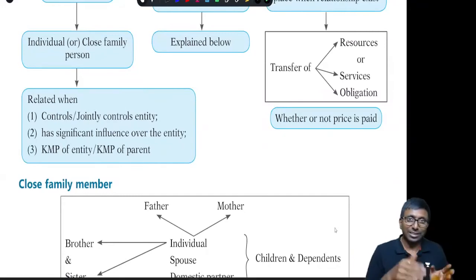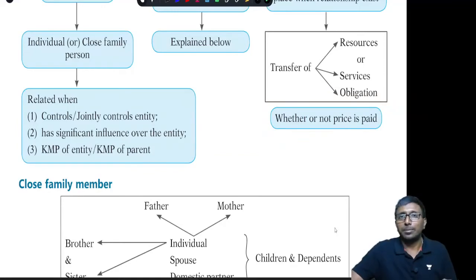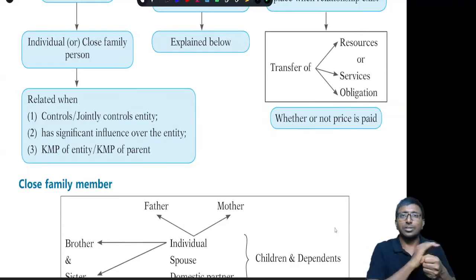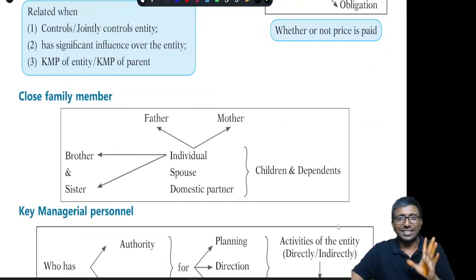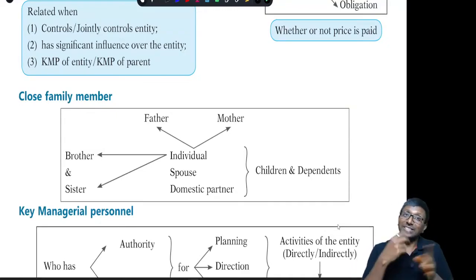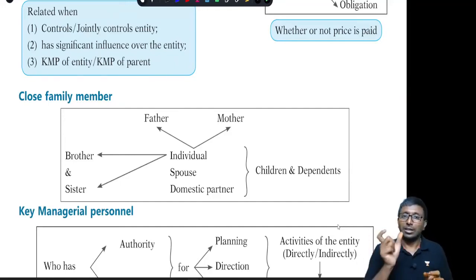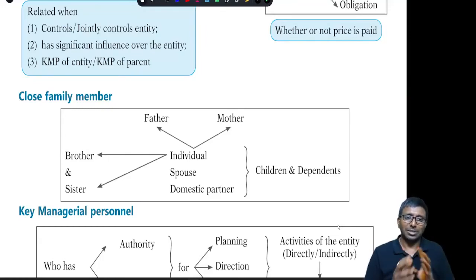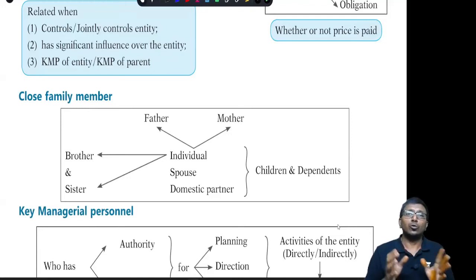Key managerial personnel of the entity and of the parent entity are related parties. Who is a close family member? If you take one individual, it includes his father, mother, brother, sister, wife, and domestic partner (domestic partner is an illegal relation). It also includes the individual's spouse and domestic partner's children, and their dependents. Remember, there is no concept of in-law in this definition — no father-in-law, mother-in-law, brother-in-law, sister-in-law, or son-in-law — unless they are dependents.